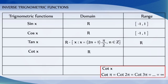The cotangent function becomes infinity for all values that are multiples of pi. Therefore, the domain of the cot function is all real numbers except the set of all x such that x is equal to n pi, where n belongs to integers, and its range is the set of all real numbers.